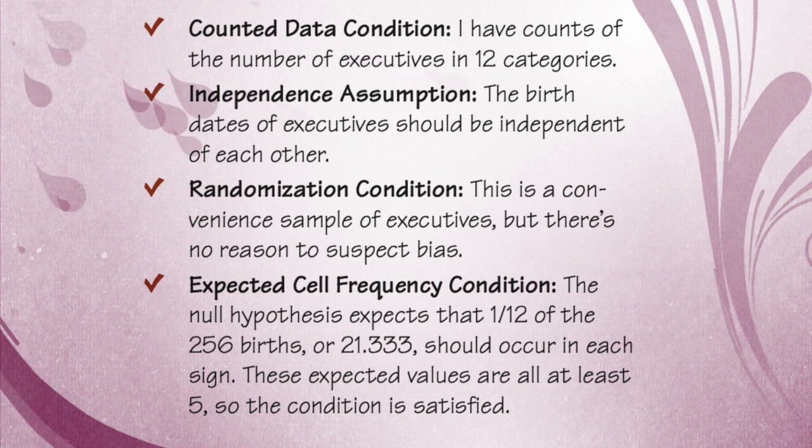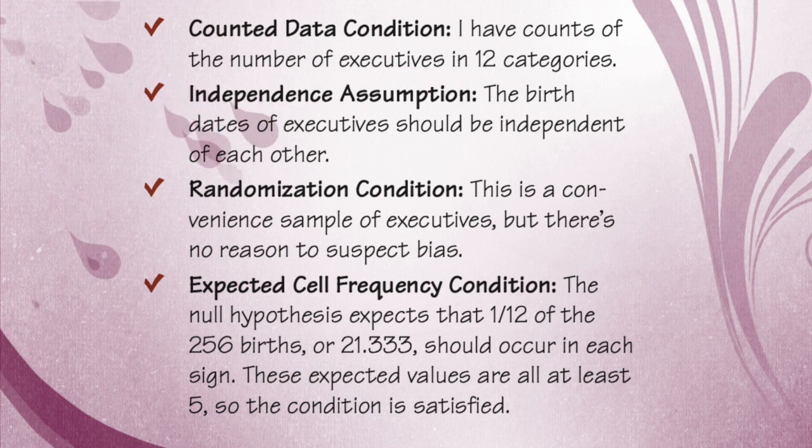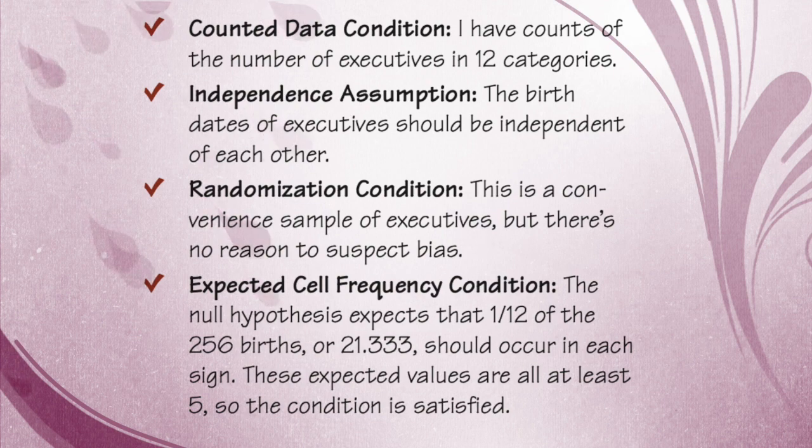This is a convenient sample of executives, but there's no reason to suspect bias, so we'll say the randomness condition is met. The null hypothesis expects that 1/12th of the 256 births, or 21 and a third, should occur in each sign. These expected values are all at least 5 so the condition is satisfied.